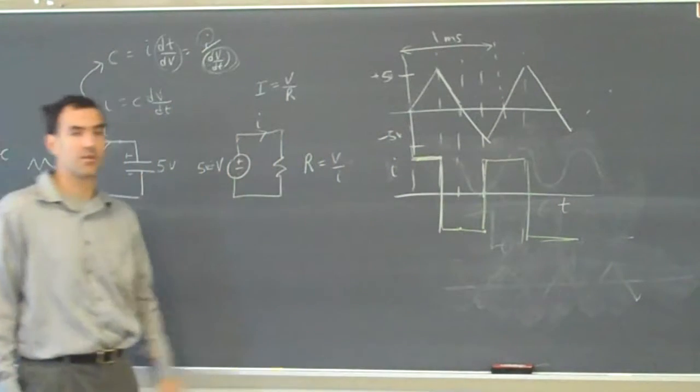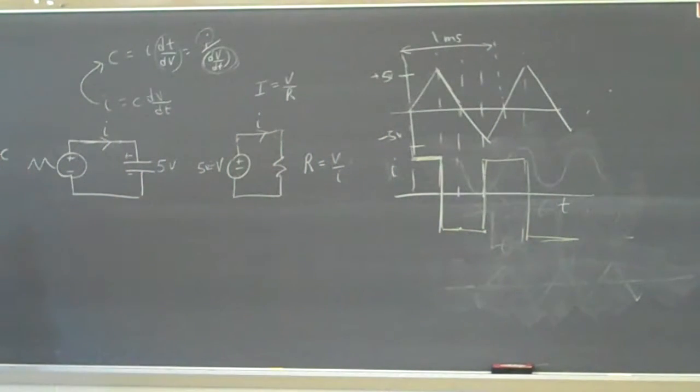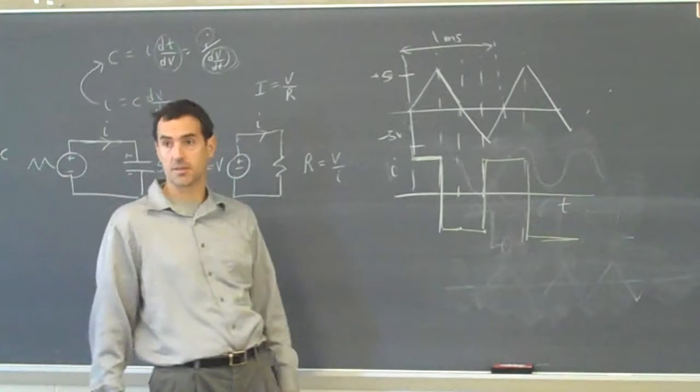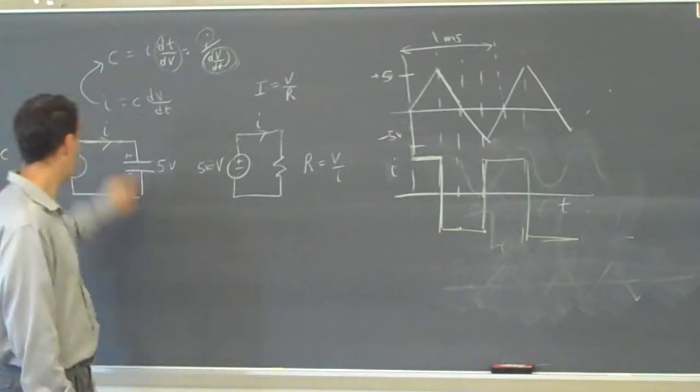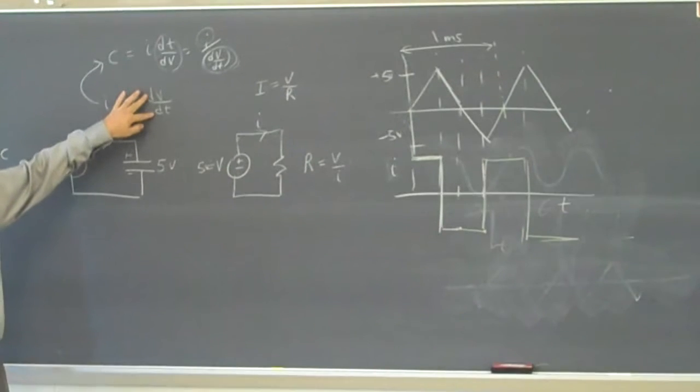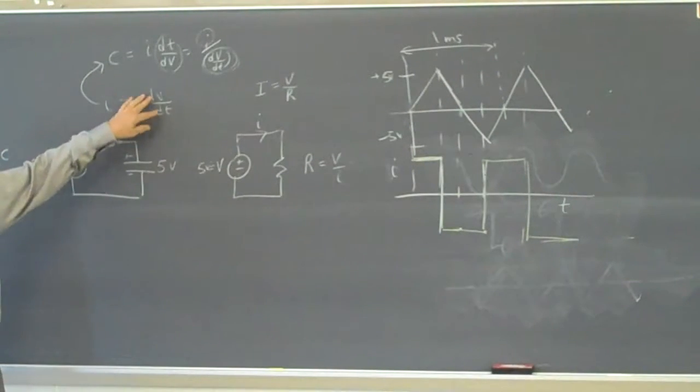So my current as a function of time should look like that. A steady slope leads to a steady current. The current onto a capacitor is equal to capacitance times dv dt. If the slope is steady, the current will be steady.